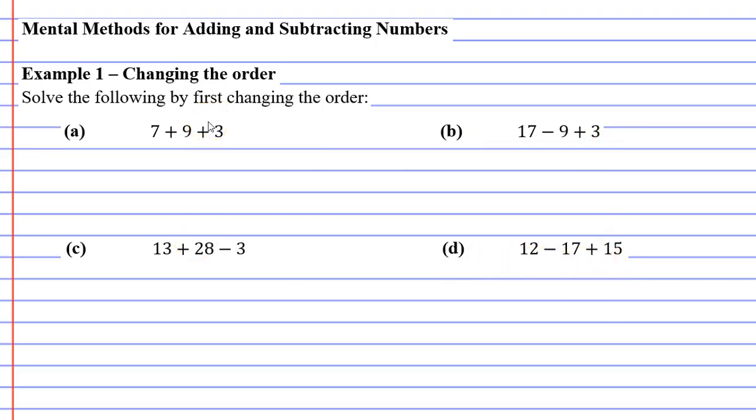Starting with question A. What we're going to do is make this 7 plus 3 plus 9. So we're going to switch the 3 and the 9 around, and the reason we do that is because 7 plus 3 is 10, and it's really easy to go 10 plus 9. 10 plus 9 is 19.